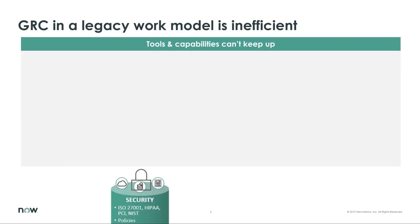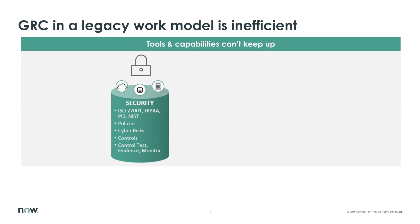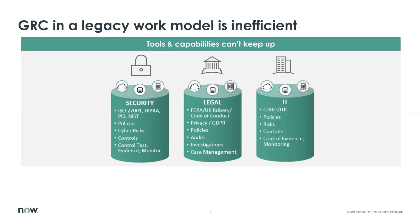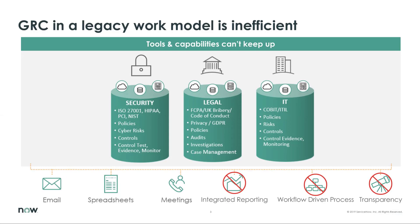In addition, this is how GRC looks in a typical enterprise today. There are usually multiple regulations an organization must adhere to. When you look across all these different groups, each group thinks it is a completely unique entity and creates its own policies, test controls, and tests these controls. This results in a ton of repeatable manual processes within each department. To bridge the gap between silos, people are forced to collaborate via emails, meetings, and spreadsheets, keeping things offline with no integrated reporting, no workflow-driven processes, and no transparency across siloed organizations.